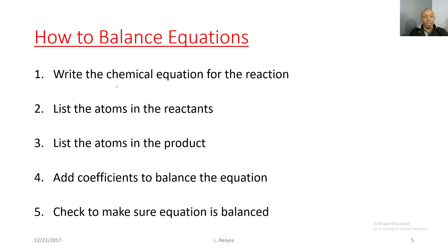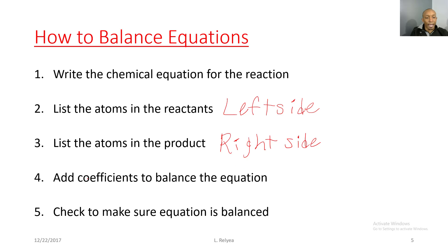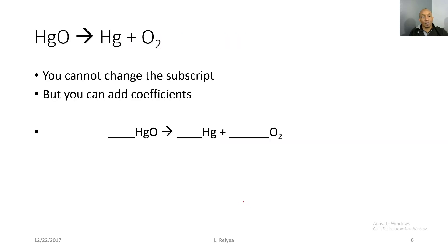In order to balance chemical equations, we take five simple steps. First, we write the chemical equation for the reaction. Second, we list the atoms in the reactants — those are on the left side, in front of the yield sign. Third, we list the atoms in the products — those are on the right side of the yield sign. Fourth, we add coefficients, which are the numbers up top, in order to balance the equation. And last but not least, we check to make sure our equation is balanced. So let's practice.